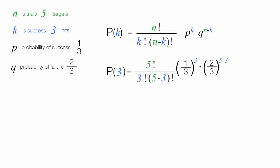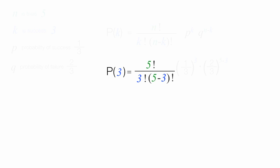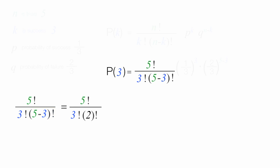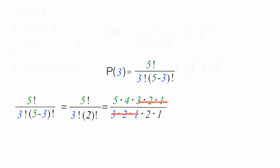I'm going to go through this step-by-step and solve this equation. The first part is equal to five factorial divided by three factorial. And five minus three is two, so I have two factorial. This equals five times four times three times two times one, divided by three times two times one, times two times one. I cancel three, two, and one in the numerator and three, two, and one in the denominator. This equals five times four in the numerator divided by two, which equals ten.